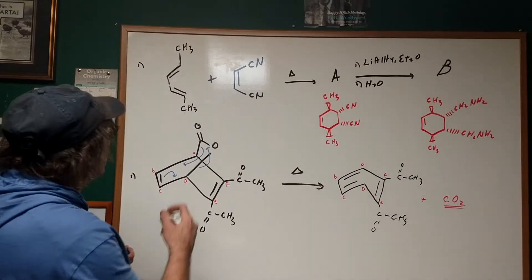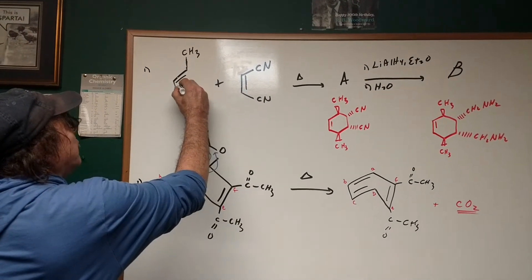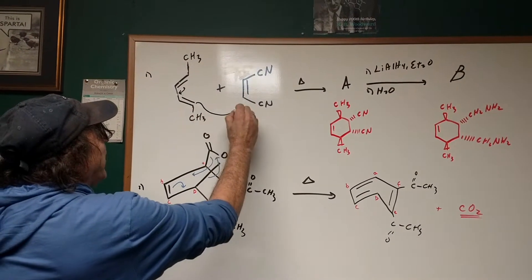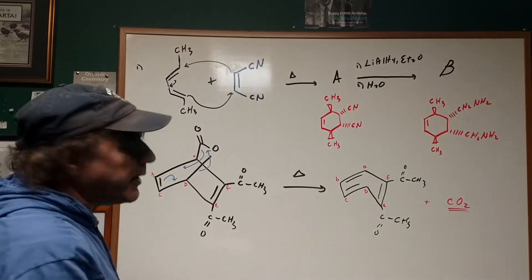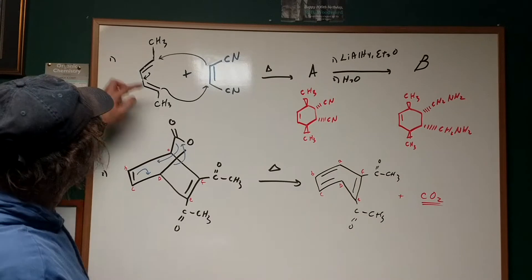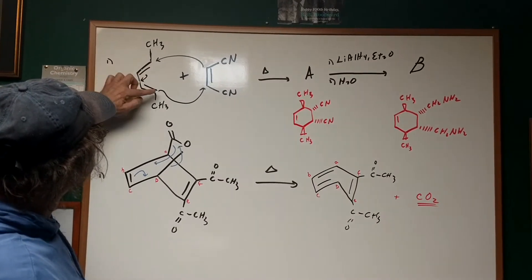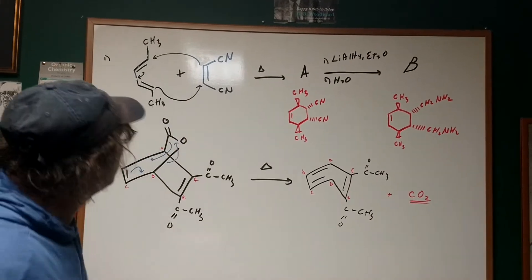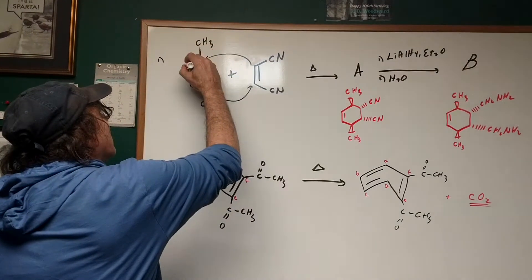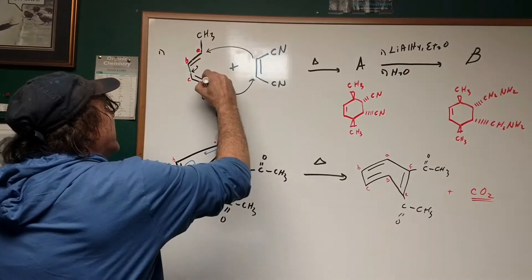What we do in a Diels-Alder reaction is we're going to need to draw three arrows. I want you to look at the arrows. This is called the concerted mechanism. It means it occurs in one single step. These electrons move here, this goes here, and this goes here.